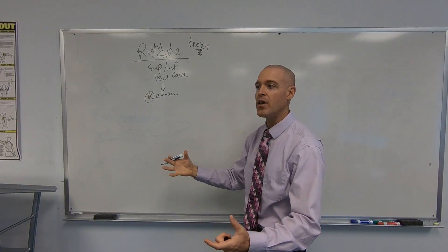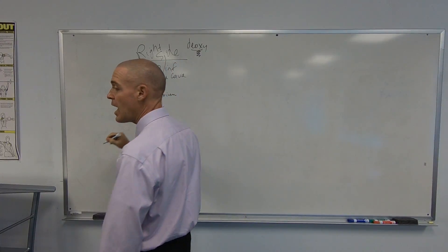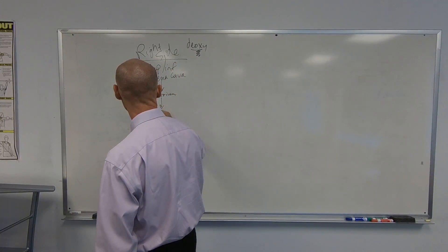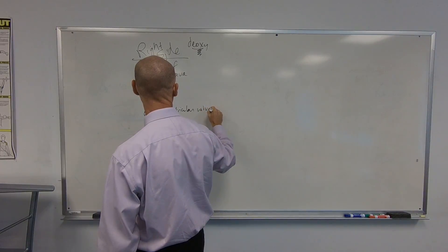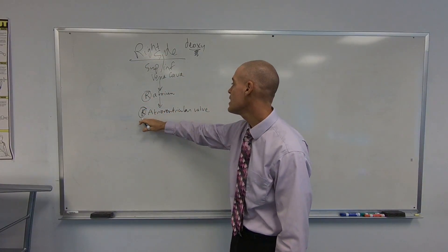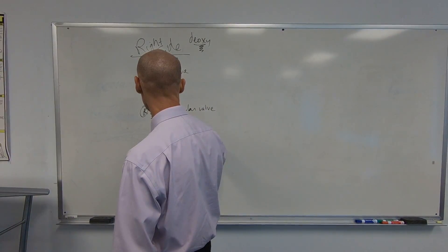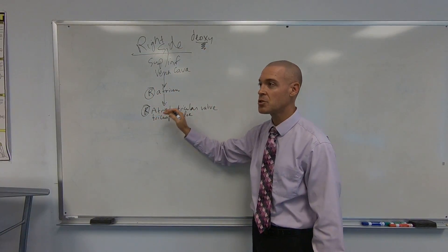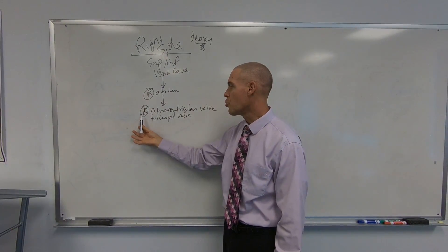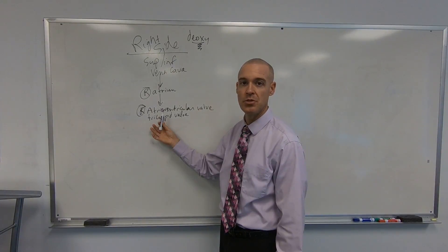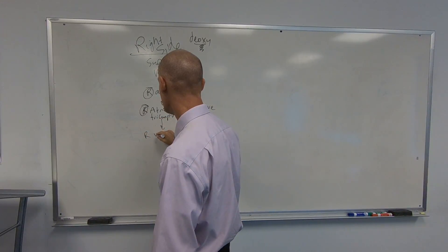Once blood goes to the right atrium, the right atrium fills and sends blood into the right ventricle. The blood goes through a valve called the right atrioventricular valve — we can also call this valve the tricuspid valve. Either name is correct. This valve has three cusps, so it's referred to as the tricuspid. Once the blood passes through this valve, it goes into the right ventricle.